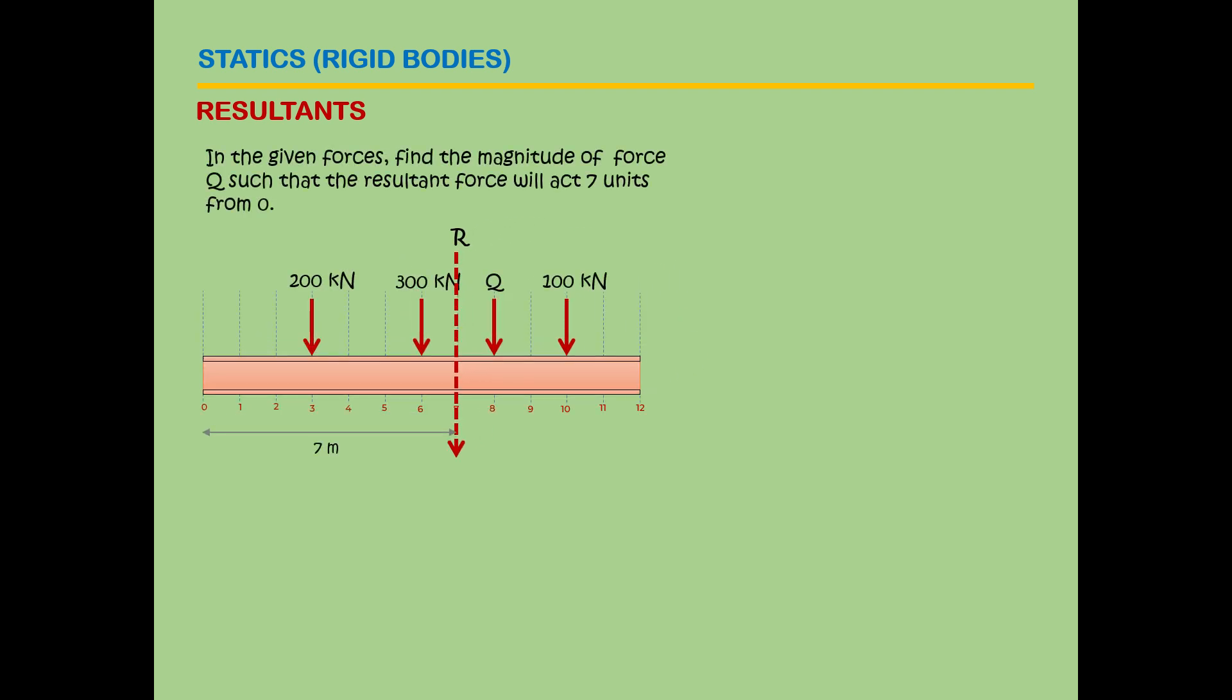In the given forces, find the magnitude of force Q such that the resultant force will act seven units from zero point, or point O. So the resultant will act seven units from zero. What we need to find is Q and the resultant. There's no need to solve the value of x or the location of the resultant because it's already given.